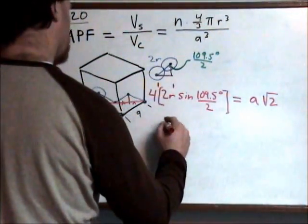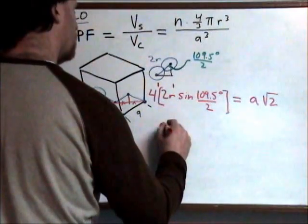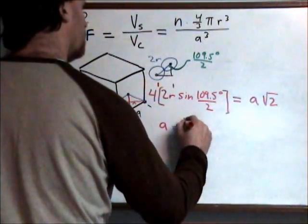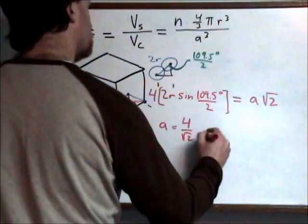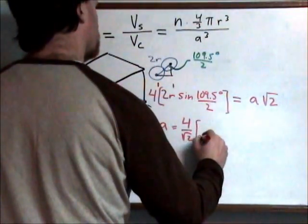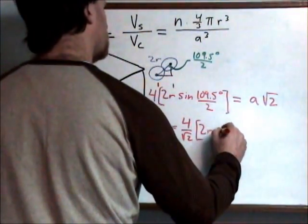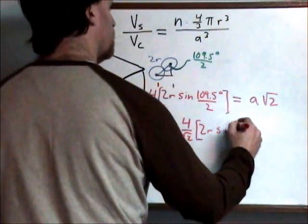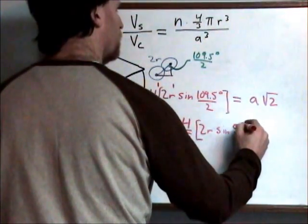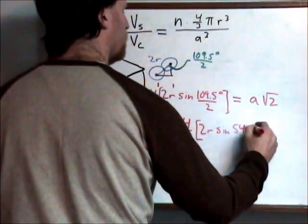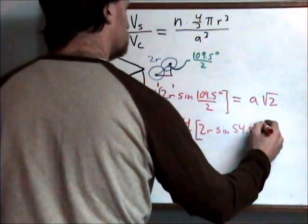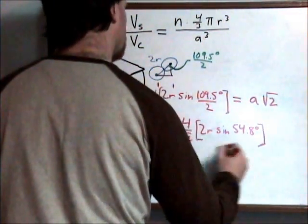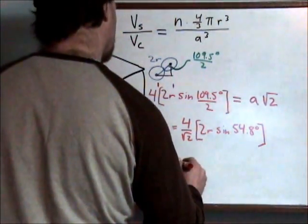Solving that, we have A equals 4 over the square root of 2 times 2R sin of 54.8 degrees.